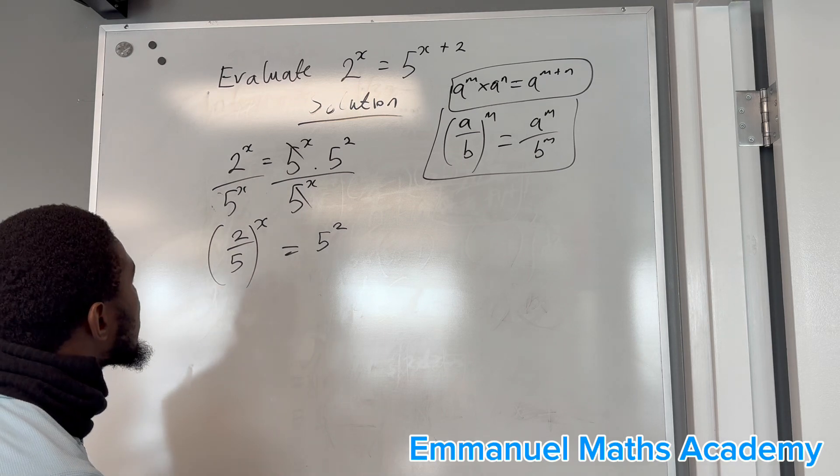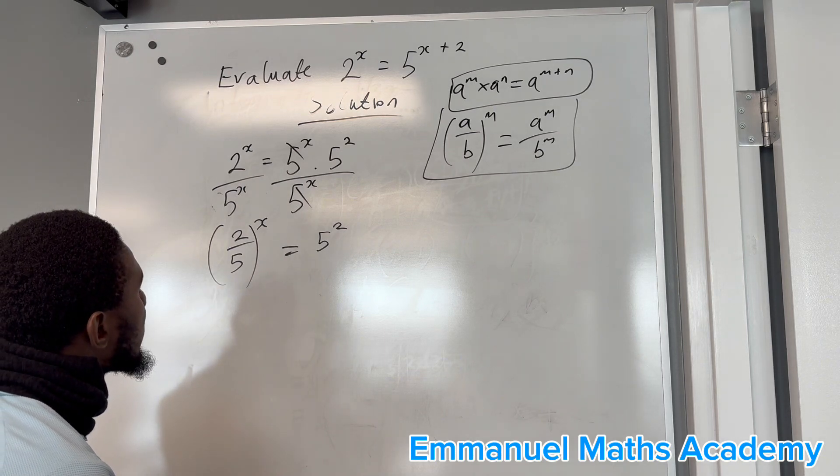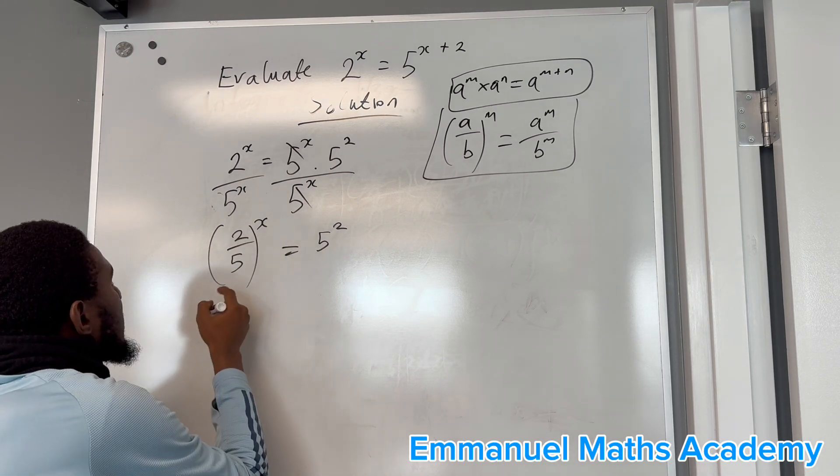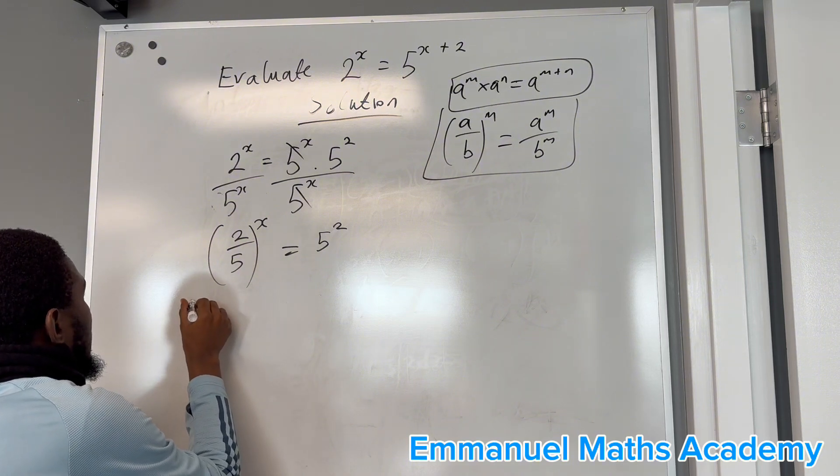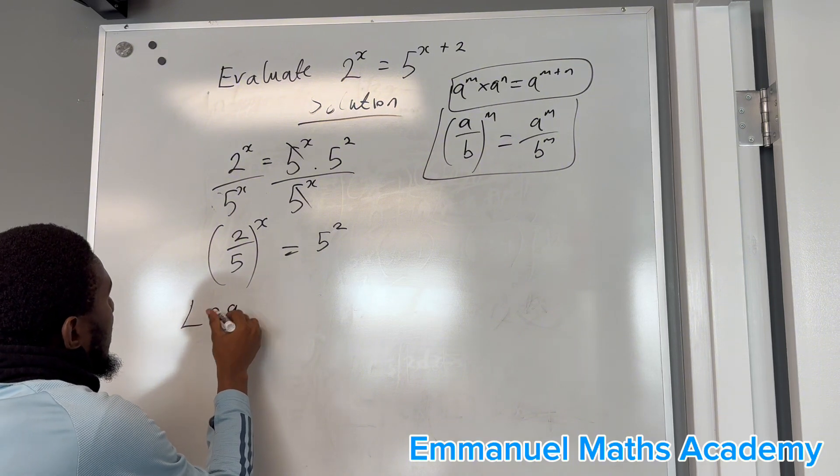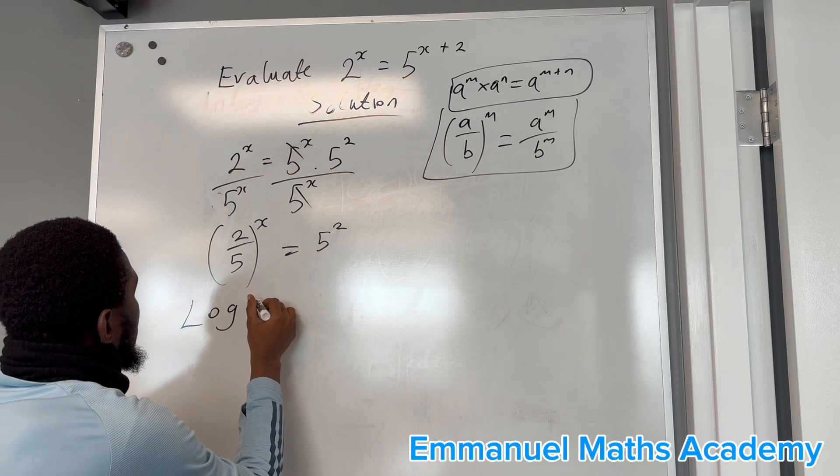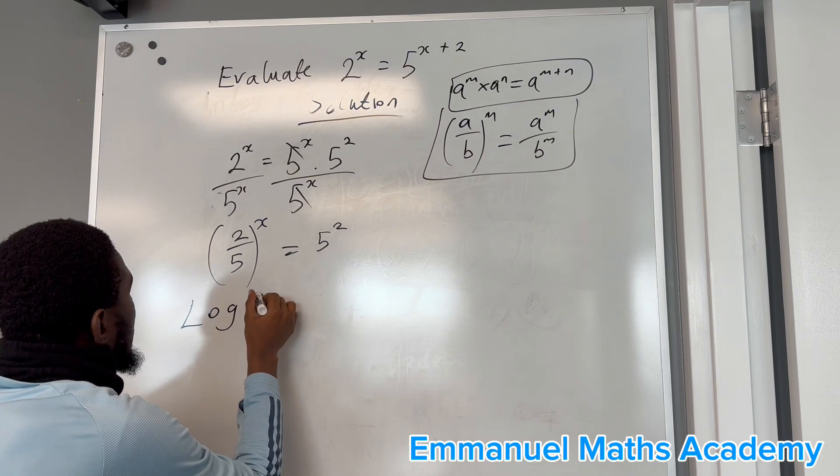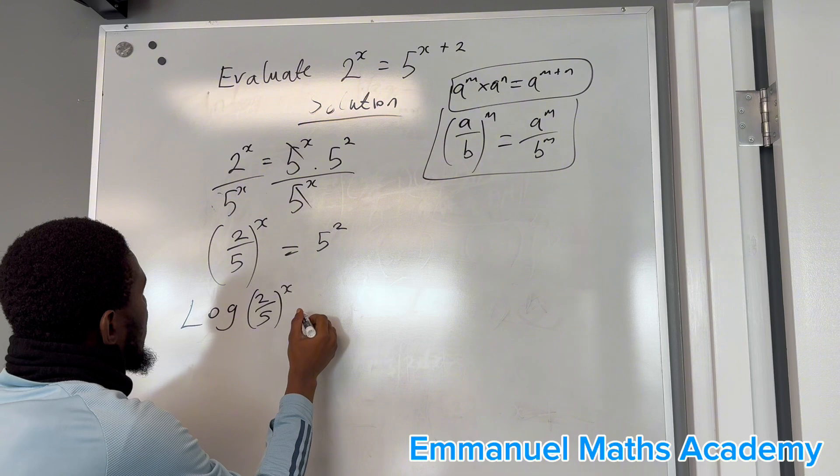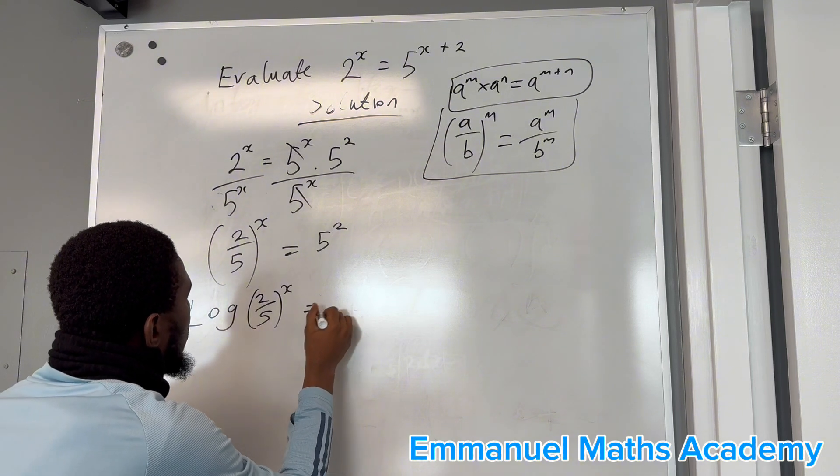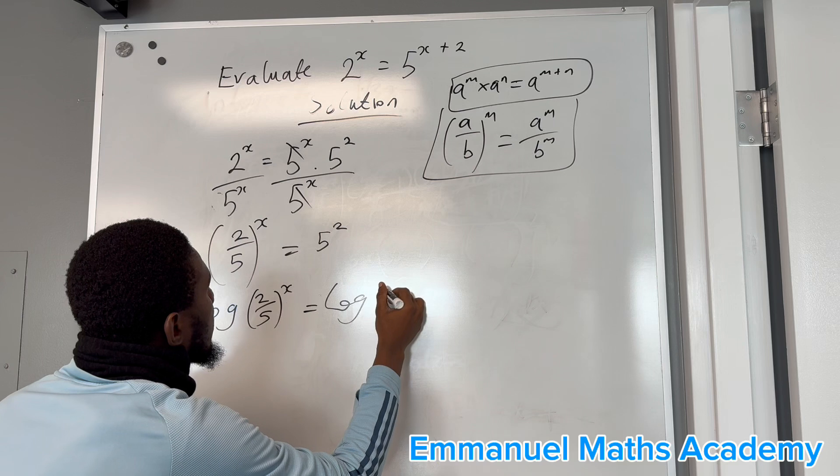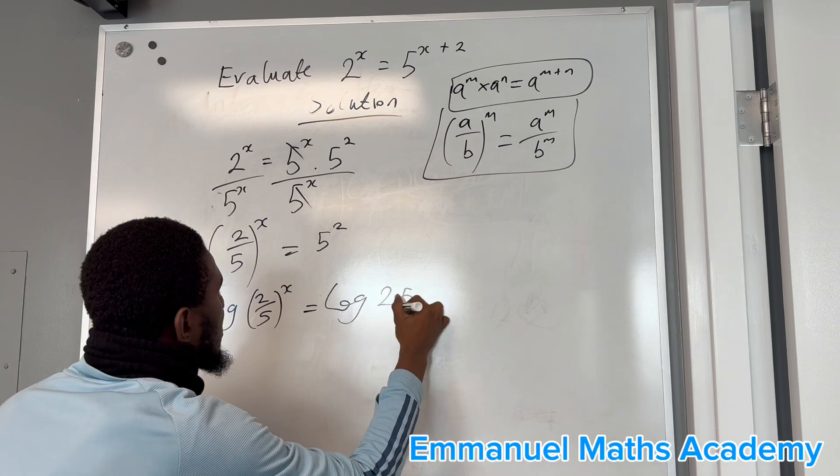What do you do next? You take the log of both sides. So log of 2 over 5 power x equals log 25.